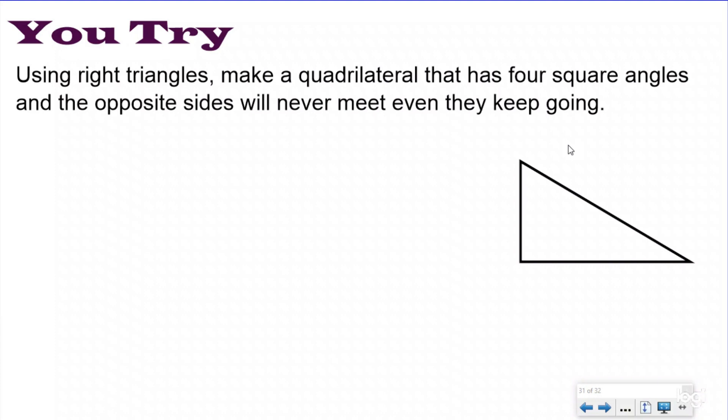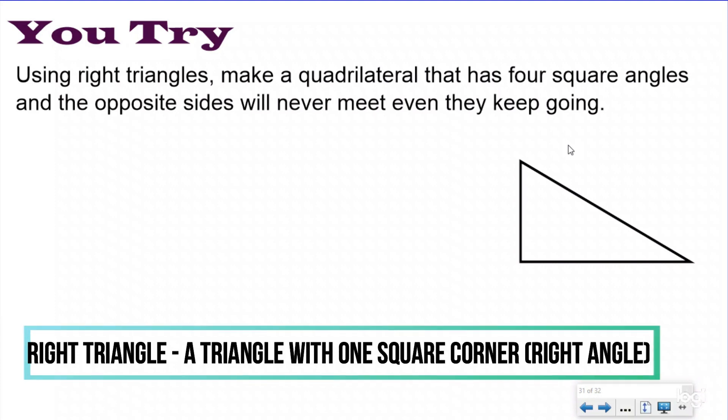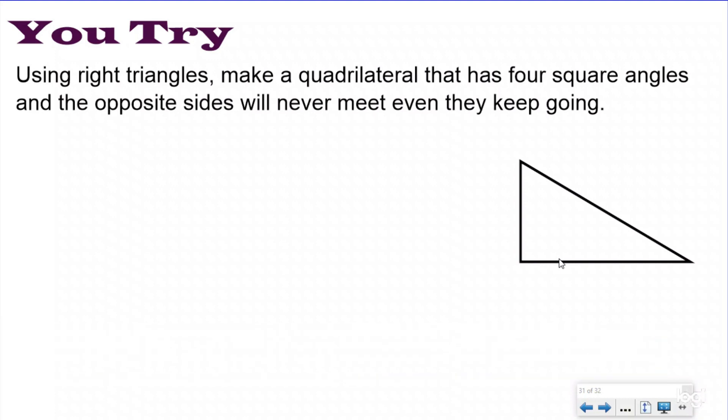If you have a way to cut out two right triangles, which is a triangle with a square corner, I would cut them out because it's easier to manipulate paper and try to put things together than drawing. If you don't, that's okay. You can just try drawing it out on your notes, but it is easier if you can cut out or rip two right triangles that you can move around on your table or desk.